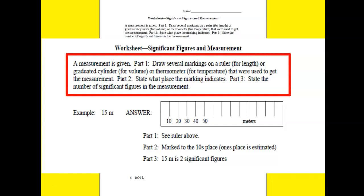The first part is that you're going to draw your tool. Based off of the unit that you have, you're going to draw a ruler, a graduated cylinder, or a thermometer. Then, for the second part, you will state what the markings indicate. Here we can see that the markings go by tens.